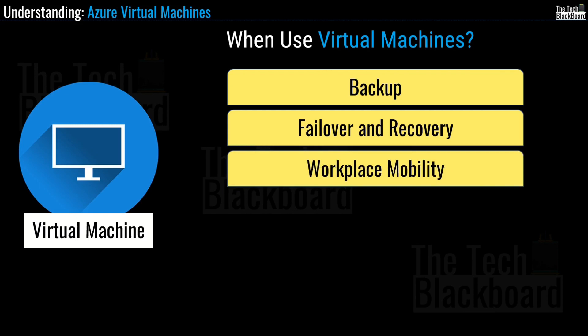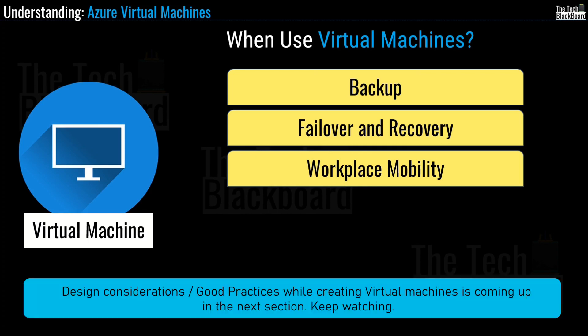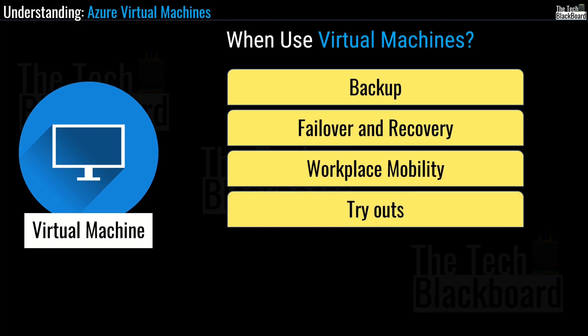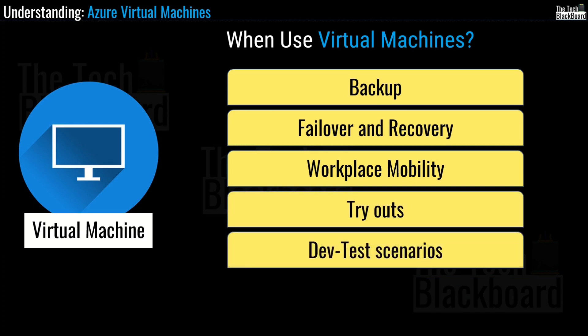The third use case is workspace mobility. Virtual machines enable employees to access their customized virtual desktop and applications from any location at any time. The rise of the remote workforce makes this a powerful tool that keeps workers productive no matter where they are. You can also use virtual machines to try out a new operating system including beta releases, or to quickly spin up a new environment to run dev or test scenarios.